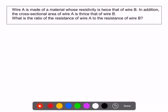Wire A is made of a material whose resistivity is twice that of wire B. Write down the variables using the standard symbols. Resistivity of A compared to resistivity of B is 2 times.